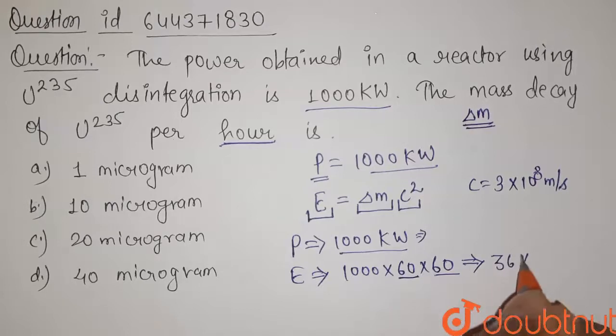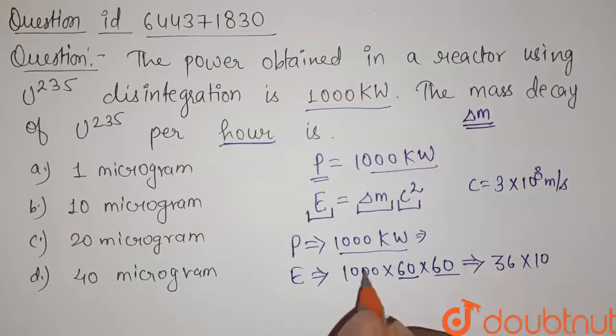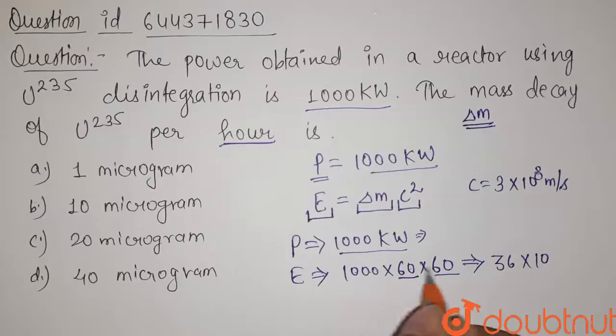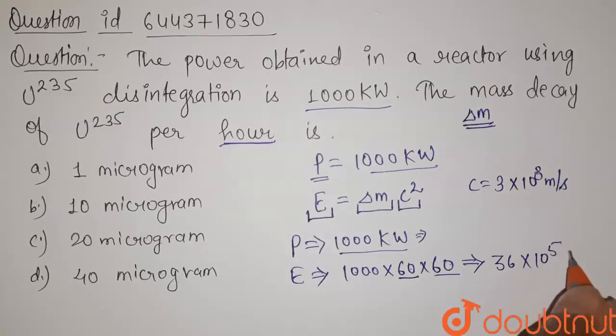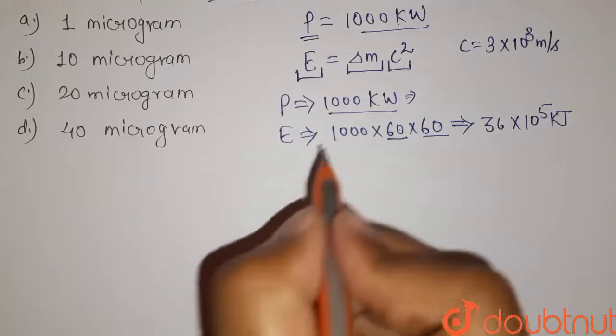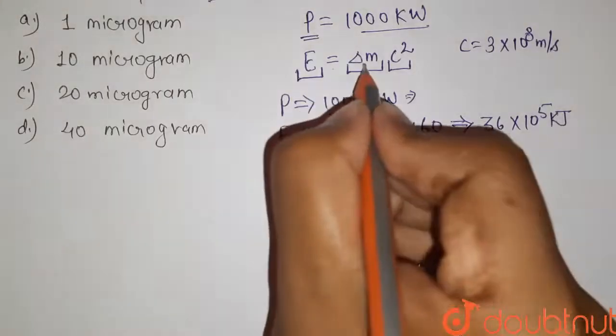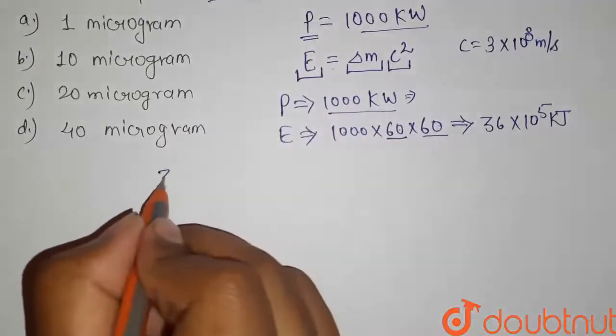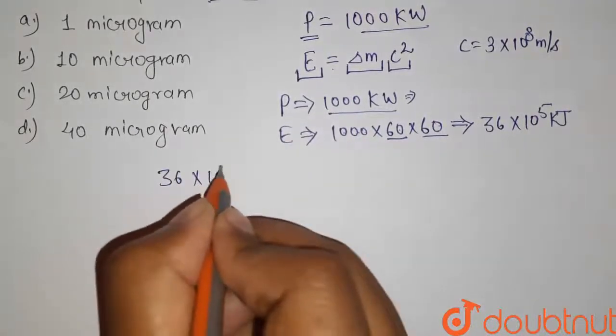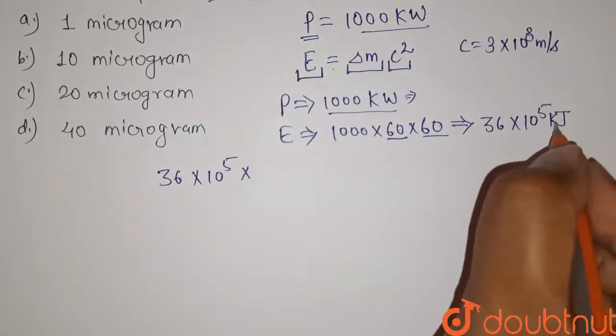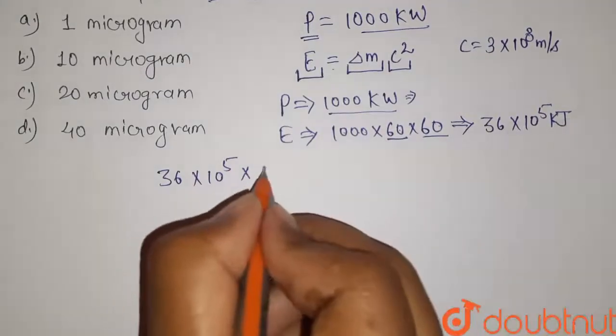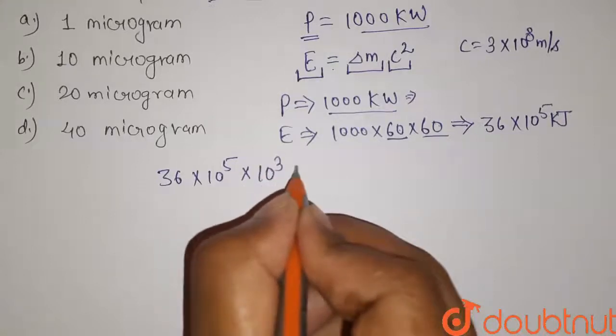So it will be 36 times 10 to the power 5. It will be 36 times 10 to the power 5 kilojoules. Now put these values in this formula. We have 36 times 10 to the power 5. This kilojoule should be converted into joules, that is the SI unit, so it will be 10 to the power 3 joules.